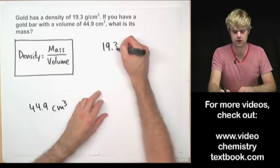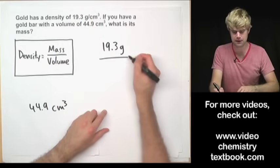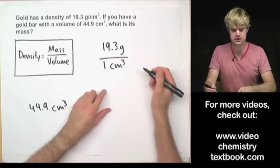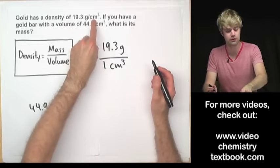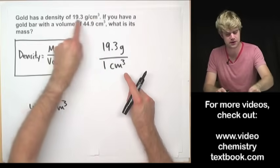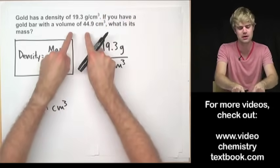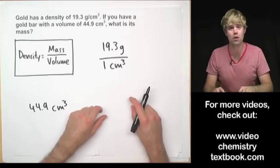It's like 19.3 grams is the top and then we have the slash here, and on the bottom I have one cubic centimeter. I have the cm cubed, but if there is no number in front of it, it can always be one. So I can take this number here, the density, and I can turn it into a conversion factor. I'm kind of pulling this cubic centimeters down and putting it on the bottom of the fraction, putting a one in front of it.